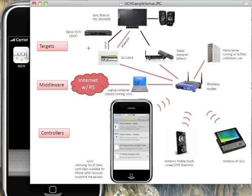Here is a sample setup of UCH in a home environment. There is a TV, a DVD player connected via GC100 master controller, and DLNA devices like a media renderer and media server.